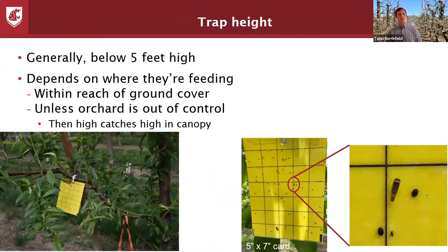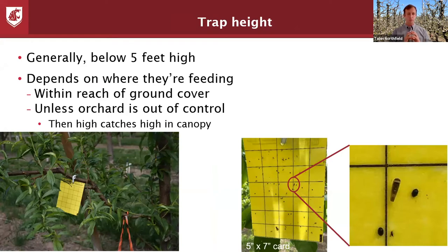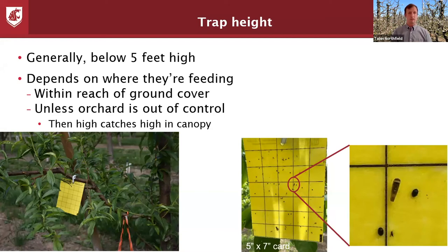The question is where to put these traps. Generally you can keep them below five feet high as a general rule, depending on where they're feeding. A study in California in the 80s and early 90s found that only in completely unmanaged, out-of-control orchards did leafhoppers appear high up in the canopy. The majority of the time it's lower in the canopy because they're probably using ground cover as avenues into the orchard.